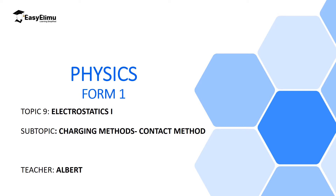Now in this lesson, we are going to discuss how you can charge a material using the second method, that is the contact method. What we are going to realize here is that if you want to charge a material positively by contact, then you will use a positively charged rod. And if you want to charge it negatively by contact, then you will use a negatively charged rod. So in the contact method, a material will acquire charges similar to that of the charging rod.